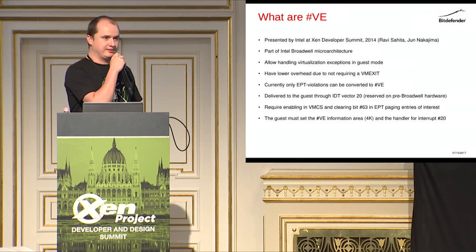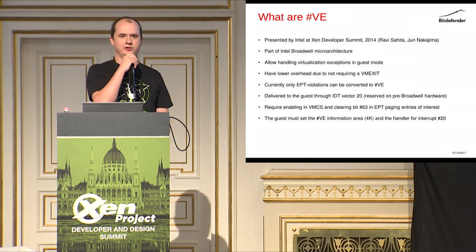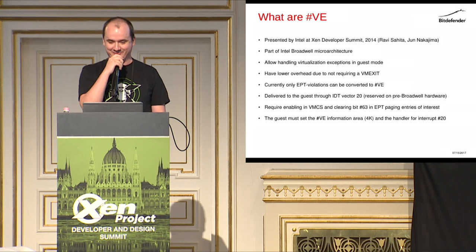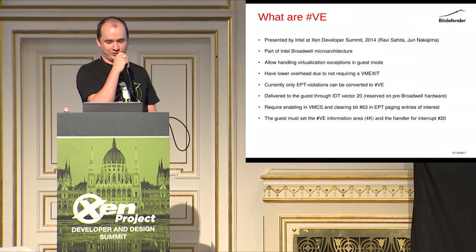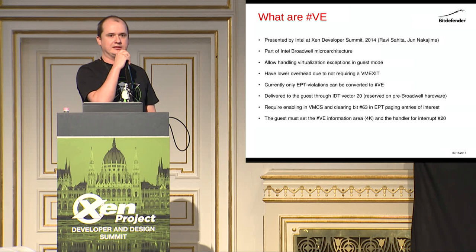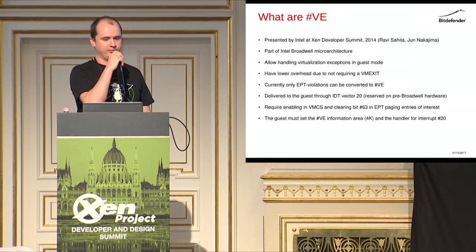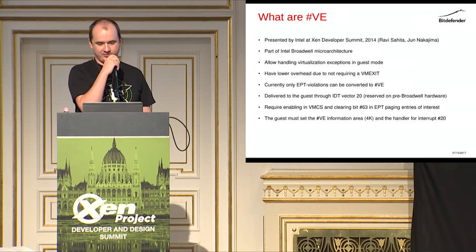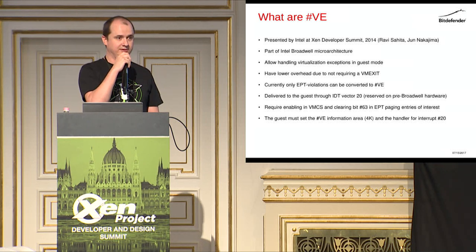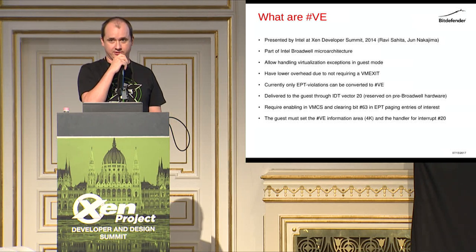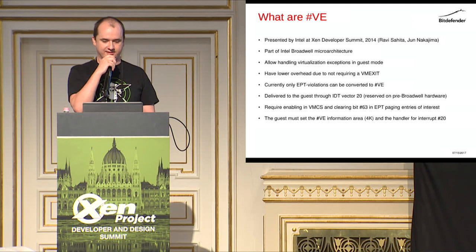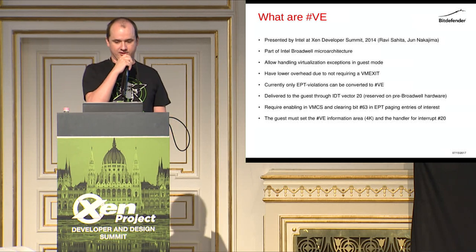Using Citrix XenServer 7.0, we made our security offering available to everyone that wants to try it. So what are virtualized exceptions, or #VE for short? They were presented by Ravi Sahita and Jun Nakajima — I'm hoping I'm pronouncing the name correctly, I'm sorry if I messed it up — in 2014, I think it was Chicago. It offered two use cases: one for speeding up networking operations in a virtual machine, and another one right up our alley — speeding up introspection. Virtualized exceptions work hand in hand with VM func, or alt-P2M in Xen. VM func showed up I believe in Haswell, and virtualized exceptions became part of the Broadwell microarchitecture.